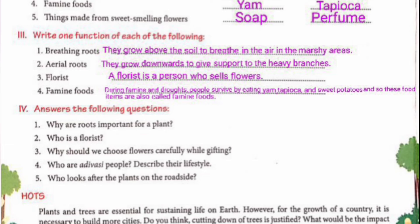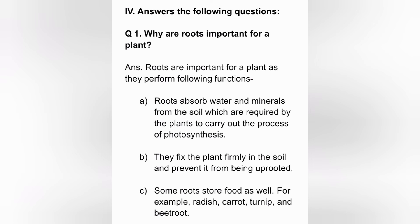Question number 4: Answer the following questions. Question 1: Why are roots important for a plant? Answer: Roots are important as they perform the following functions. A: Roots absorb water and minerals from the soil, which are required by the plants to carry out photosynthesis. B: They fix the plant firmly in the soil and prevent it from being uprooted. C: Some roots store food as well, for example radish, carrot, turnip, and beetroot.